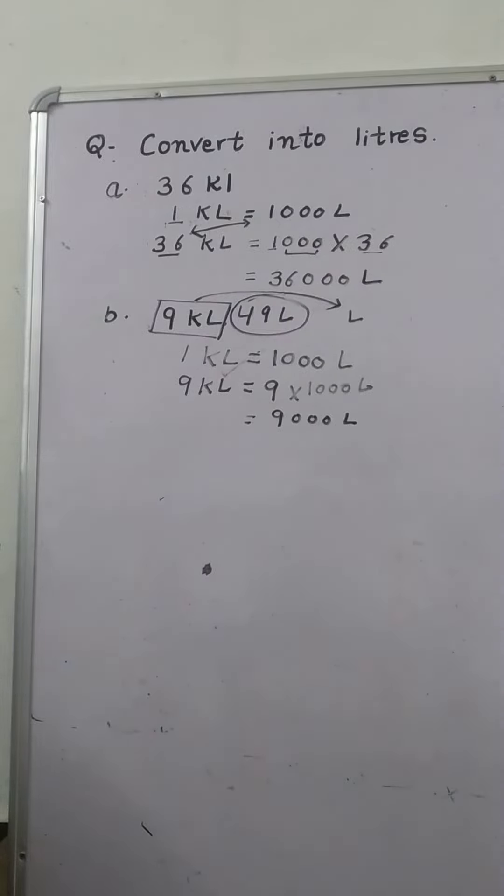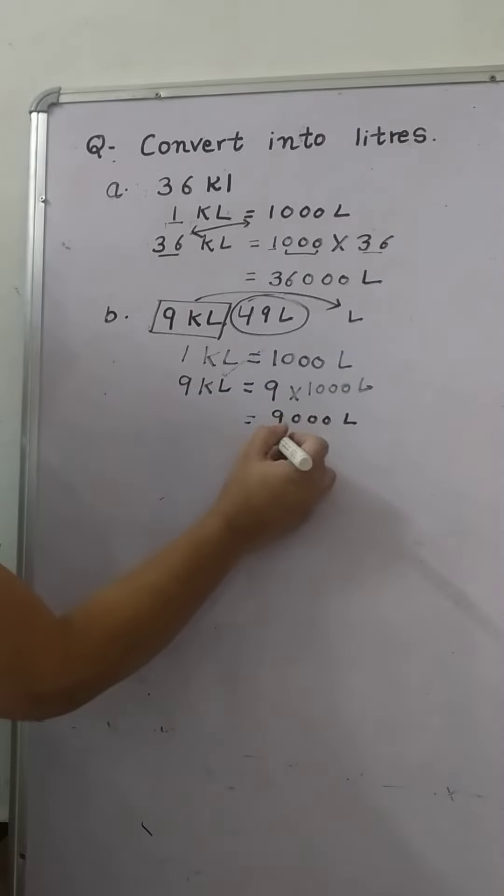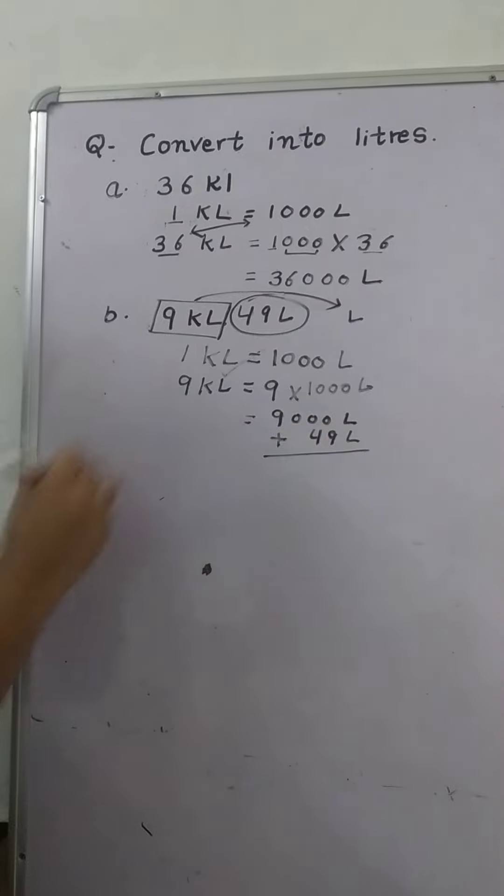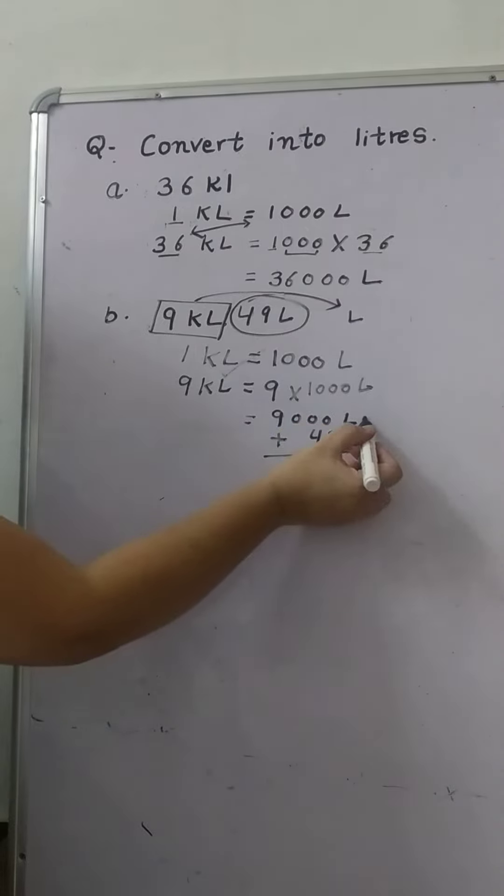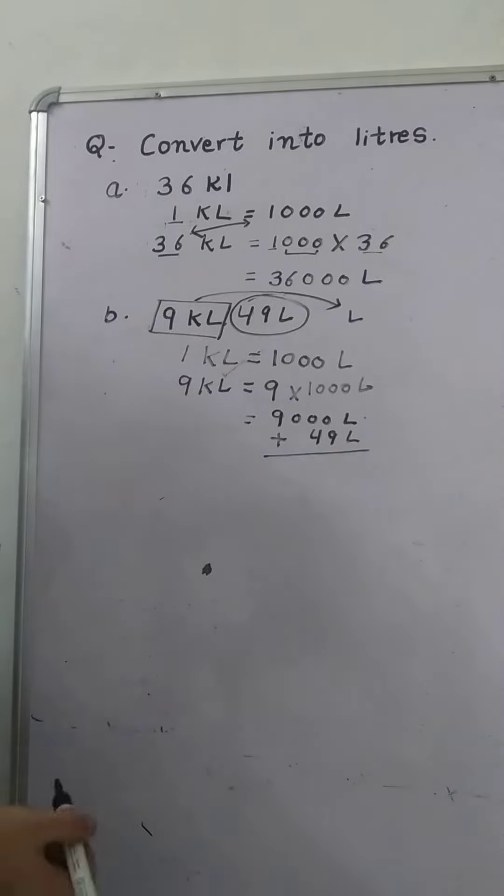Now this 49 liter was already in liter. So what we will do? We will add it. 9000 plus 49 liter. This we can add because this is in liter, this is in liter. Both are in liter, so we can add it.